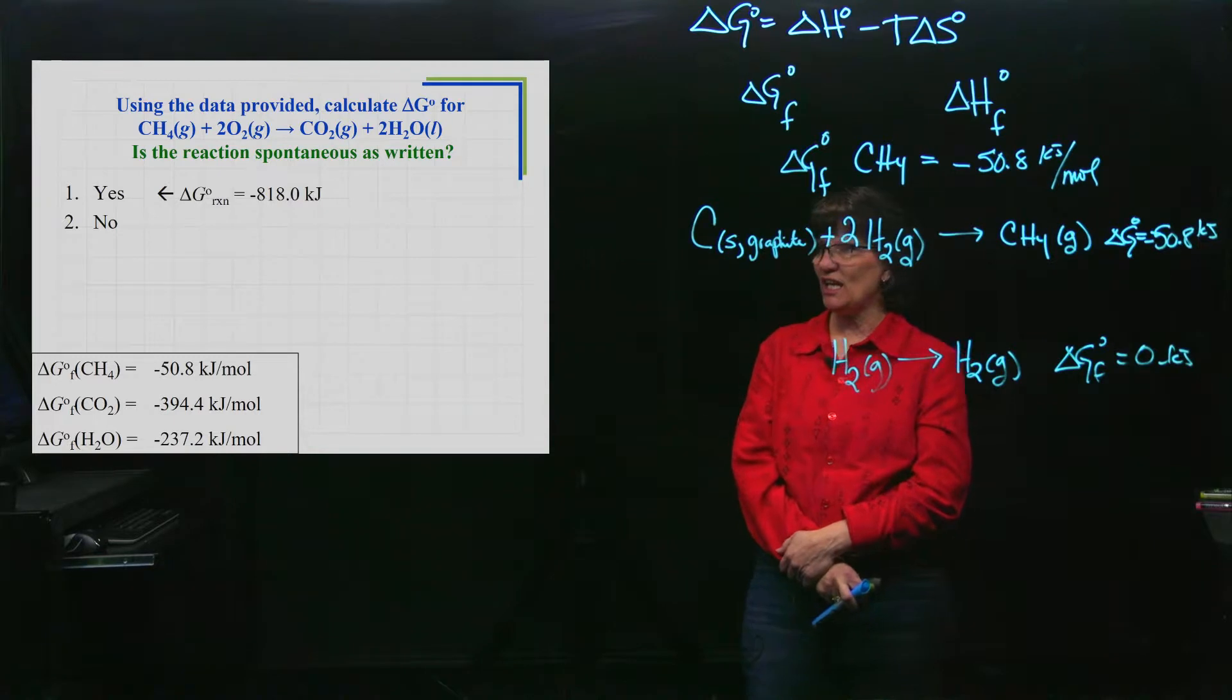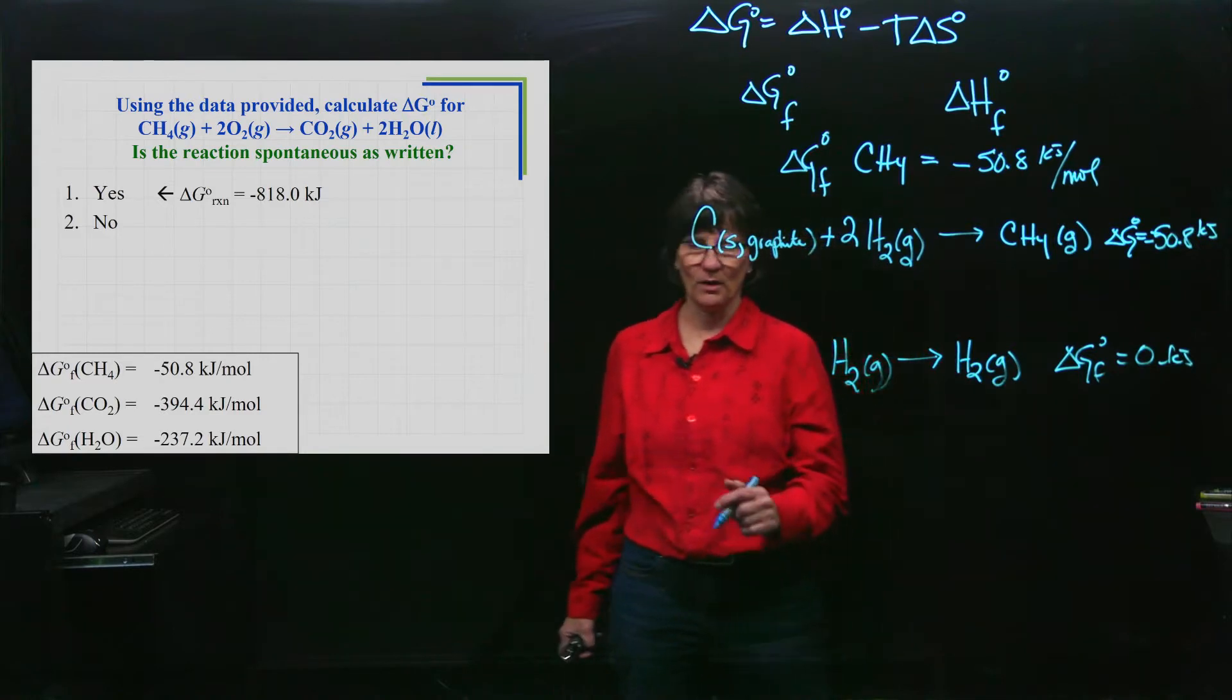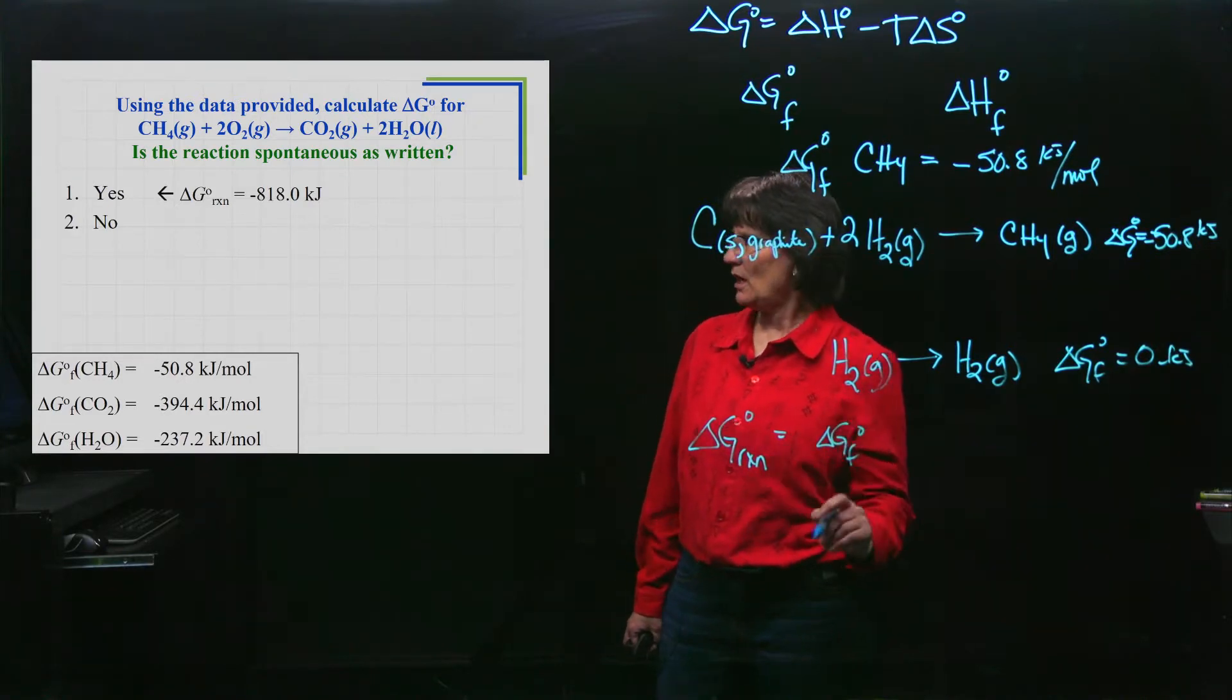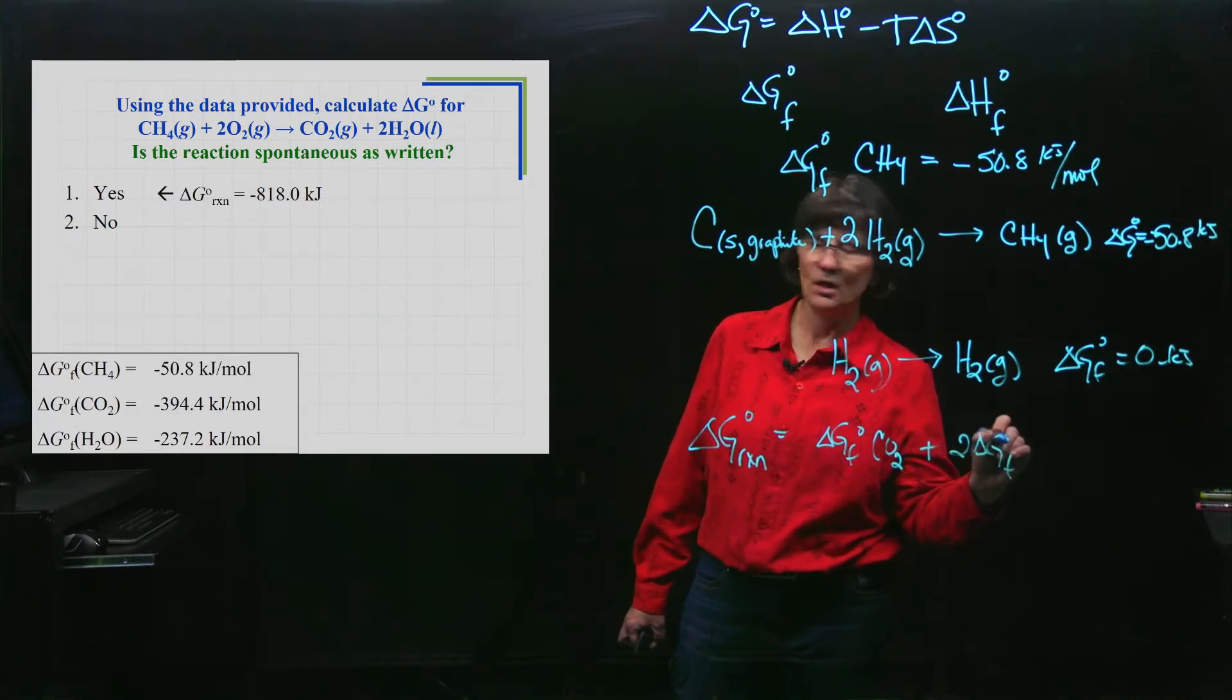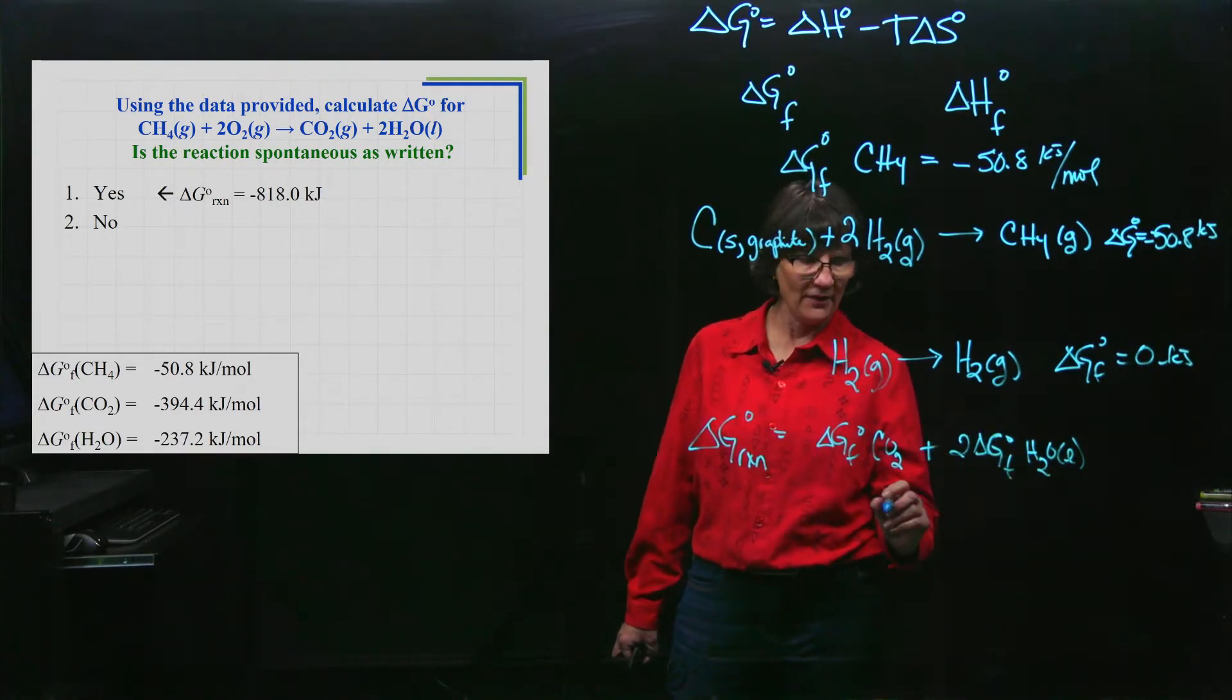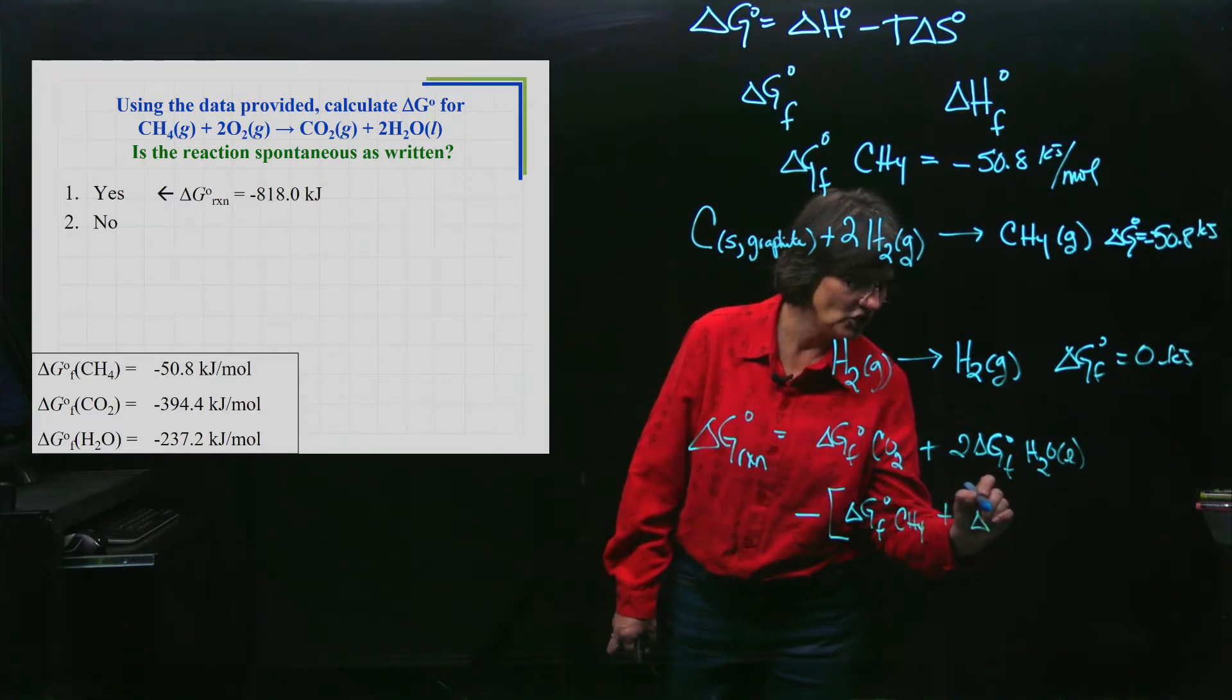You got a Delta G of this reaction as negative 818.0 kilojoules. That is the value using that summation formula. To get the Delta G of the reaction, since I'm using standard Delta G's of formation, it's a standard Delta G of the reaction. It would be the Delta G of formation of carbon dioxide, which was given to you, plus two times the Delta G of formation of water. Common mistake students do: make sure you're looking for it for the liquid state.